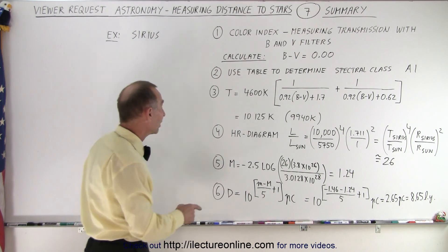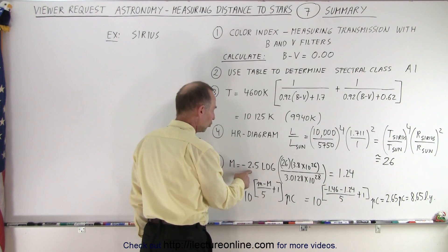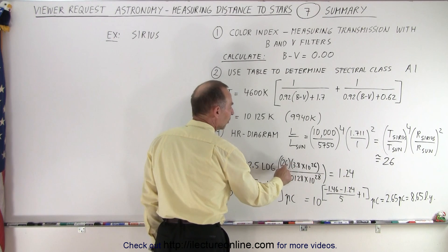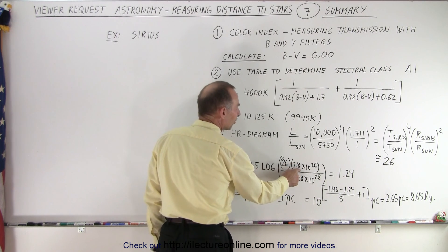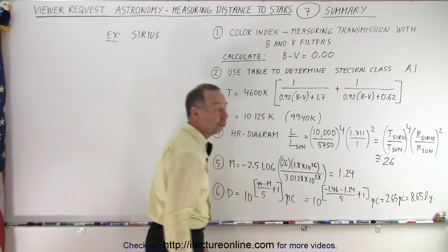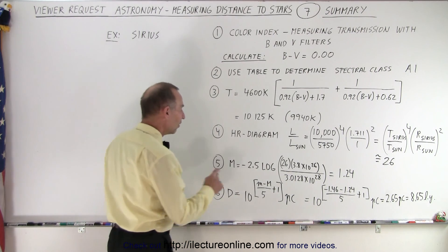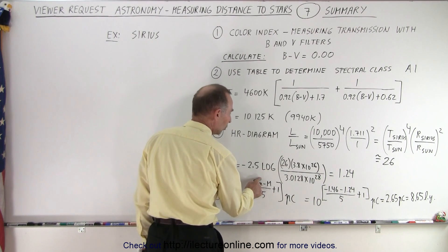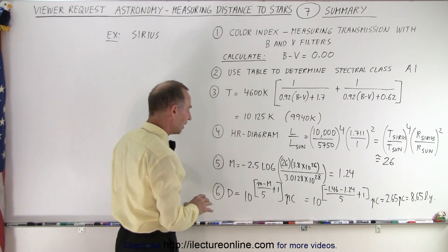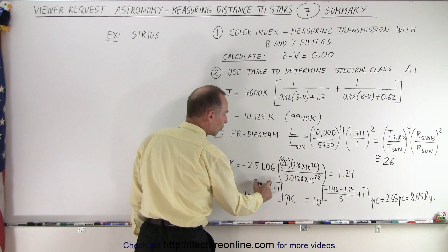Then we use that to find the absolute magnitude. It's minus 2.5 times the log of the ratio of 26 times the luminosity of the Sun divided by the base luminosity. When we do that we get 1.24, so that's the absolute magnitude of Sirius. Then we use the difference between the apparent magnitude, which is about minus 1.46 or minus 1.44, and the absolute magnitude we just calculated.